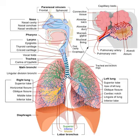In land animals the respiratory surface is internalized as linings of the lungs. Gas exchange in the lungs occurs in millions of small air sacs called alveoli in mammals and reptiles, but atria in birds. These microscopic air sacs have a very rich blood supply, thus bringing the air into close contact with the blood. These air sacs communicate with the external environment via a system of airways, or hollow tubes, of which the largest is the trachea,